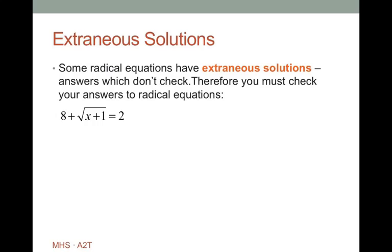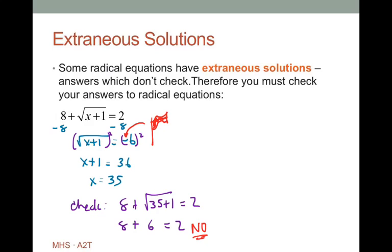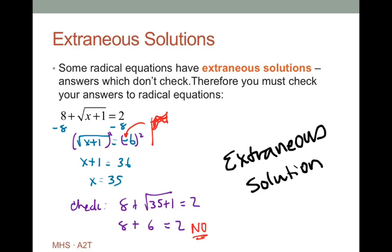Sometimes you do get extraneous solutions. Isolating the radical gives square root of x plus 1 equals negative 6. That negative sign is a red flag — squaring might introduce an extraneous solution. Squaring both sides gives x plus 1 equals 36, so x equals 35. But checking: 8 plus square root of 35 plus 1 equals 8 plus 6, which does not equal 2. So x equals 35 is an extraneous solution. Always check your results.